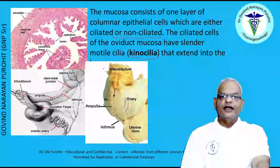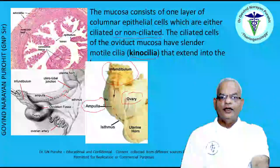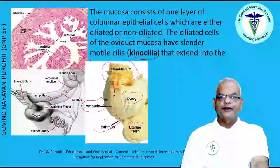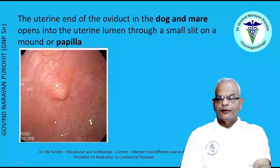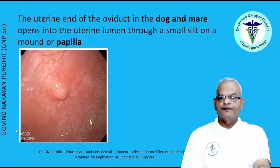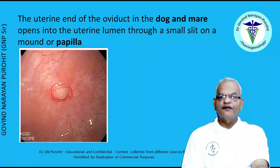In this histological picture and the picture showing the infundibulum and ovary of a mare, you can see the ampulla and the isthmus attaching to the uterine horn. In the dog and mare, the uterine end of the oviduct opens into the uterine lumen through a small slit on a mound or papilla. This is an endoscopic view of a mare oviduct showing the papilla.